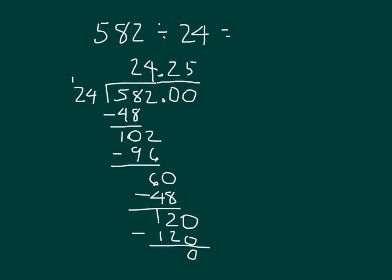Reading my whole number sentence, I have 582 divided by 24, equaling 24 and 25 hundredths.